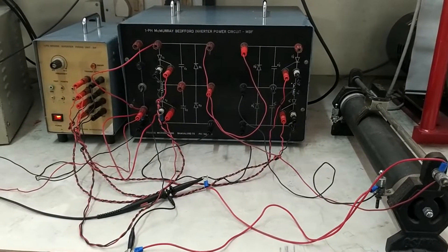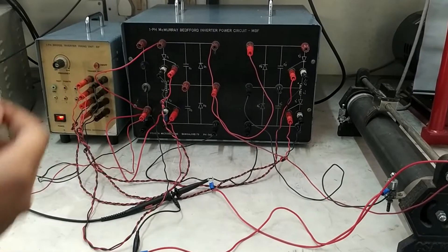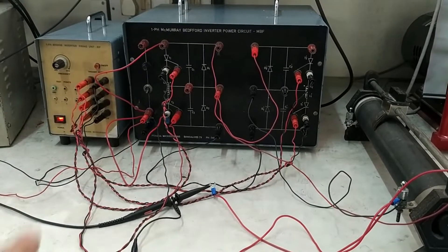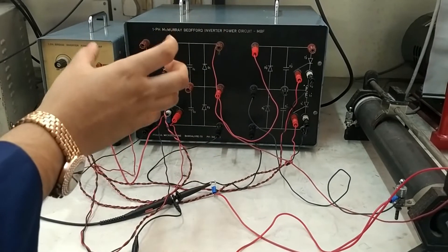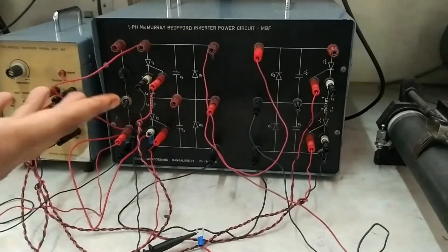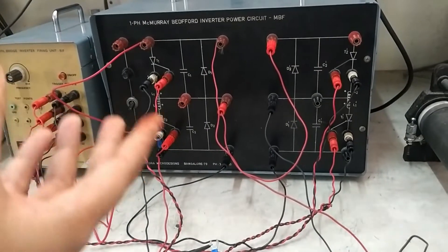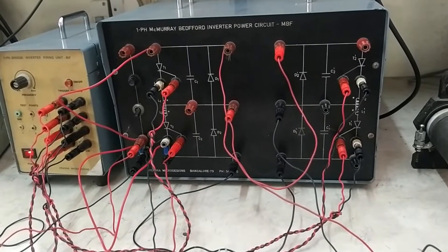Here you can see the connections are made as per the circuit diagram. So a single phase modified McMurray-Bedford Full Bridge Inverter can be realized by two half bridge inverters. By adding two half bridges forms a McMurray-Bedford Inverter circuit. So the components required in this McMurray is double that of the half bridge inverter.